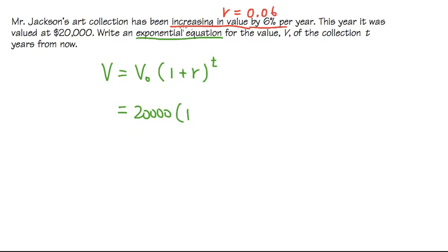Once again, whenever it says increasing or getting more and more, we use positive r, the positive rate. If it's decreasing, then you use negative.